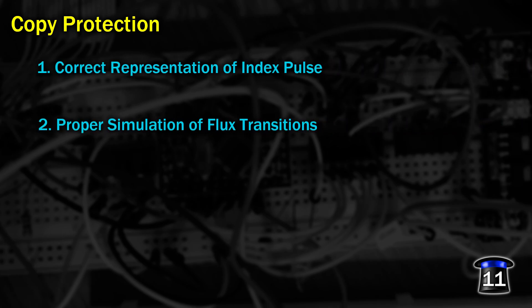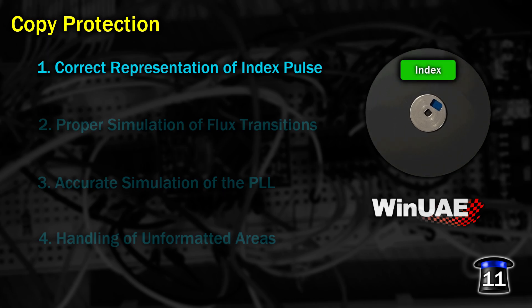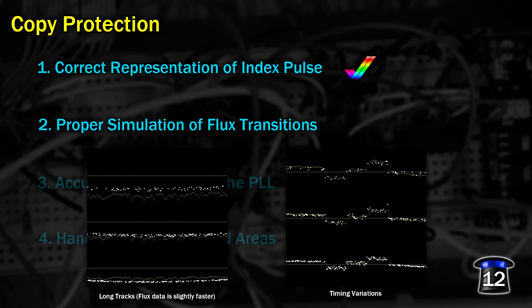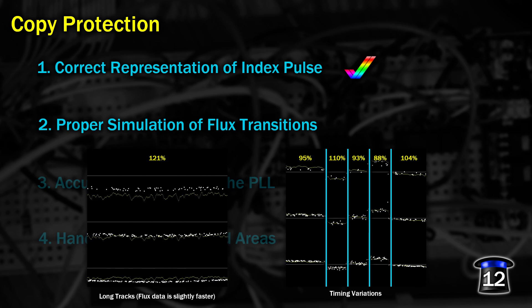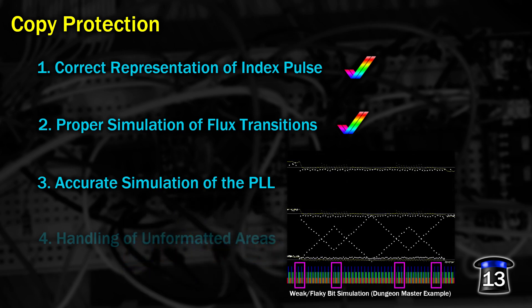Now let's look at copy protection. There are several methods I need to overcome, and I didn't want to code for any of them specifically — I wanted the solution to just work properly. There are basically four things that need to be in place: 1) Correct representation of the index pulse — already handled, just making sure the information is passed to WinUAE at the right moment. 2) Proper simulation of the speed of transitions on the disk — required for disks with long tracks or sectors at slightly odd speeds, and WinUAE already has support, so I just pass this speed or density information after extracting it from the flux timings. 3) Accurate simulation of the Amiga's PLL — the PLL must be simulated exactly so that flux transitions are correctly converted to MFM bit sequences, making copy protection techniques like flakey bits on games like Dungeon Master work properly. The final PLL code I adapted from code used by the SCP file code written by Keir Fraser, already present in WinUAE.